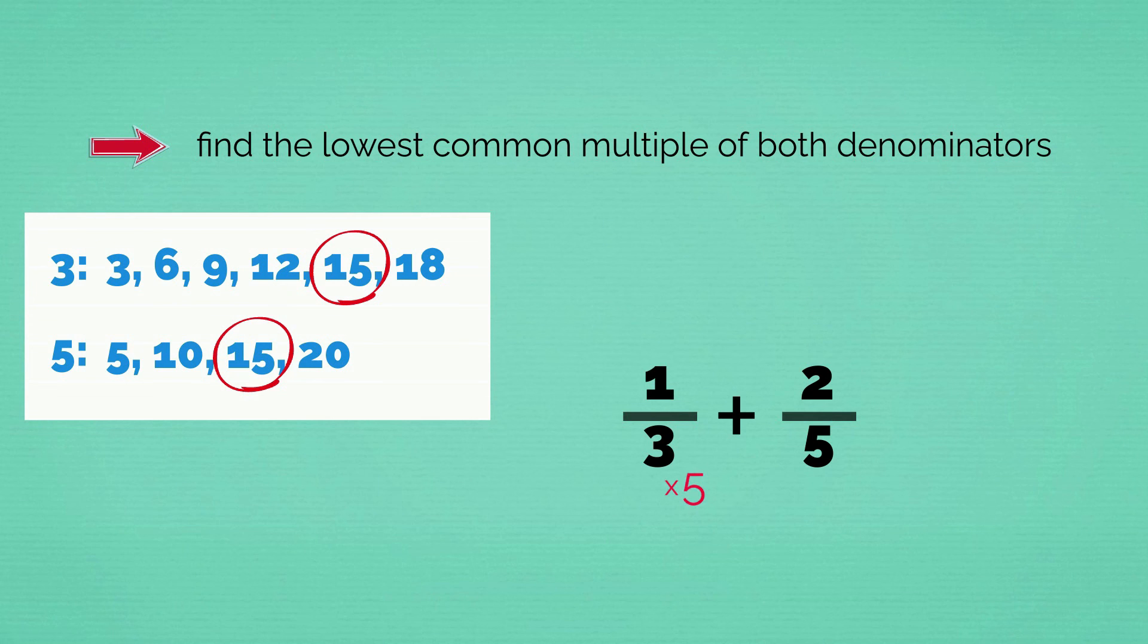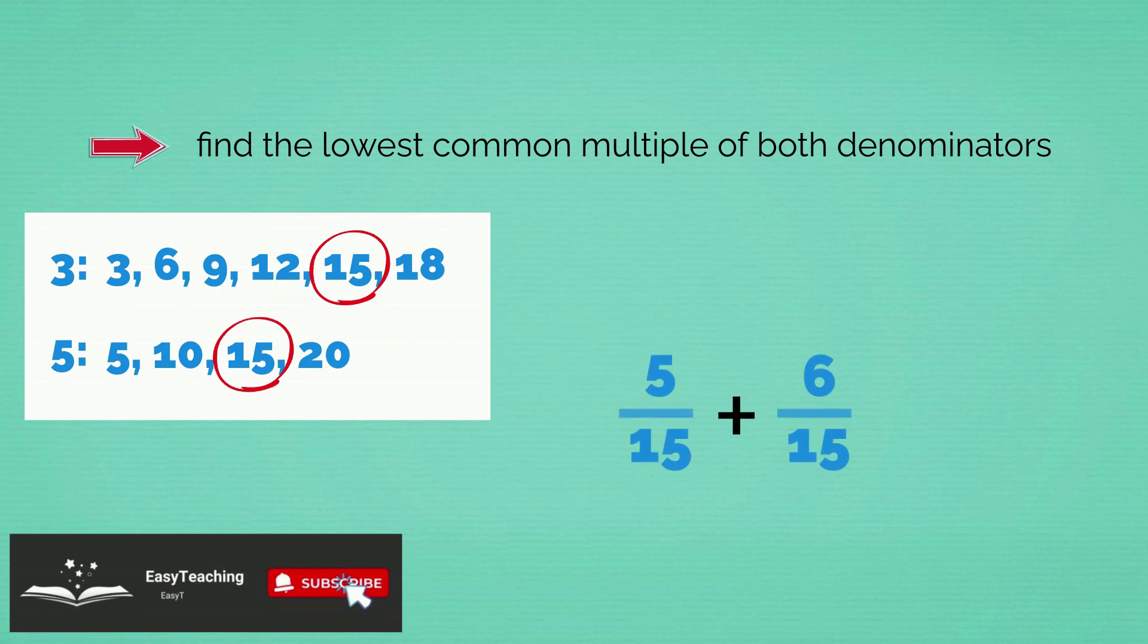3 times 5 equals 15. Now the top number: 1 times 5 is 5, which gives us 5 15ths. Now we have to convert our next fraction into 15ths. We do that by multiplying the 5 by 3. 5 by 3 equals 15. And then we do the same to the numerator: 2 times 3 is 6, which is 6 15ths. 5 15ths plus 6 15ths equals 11 15ths.